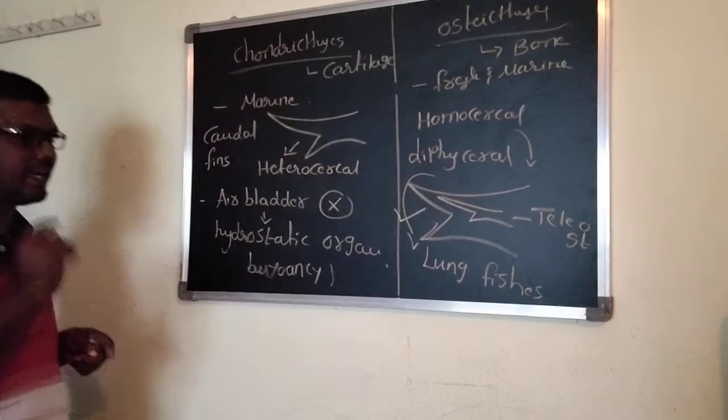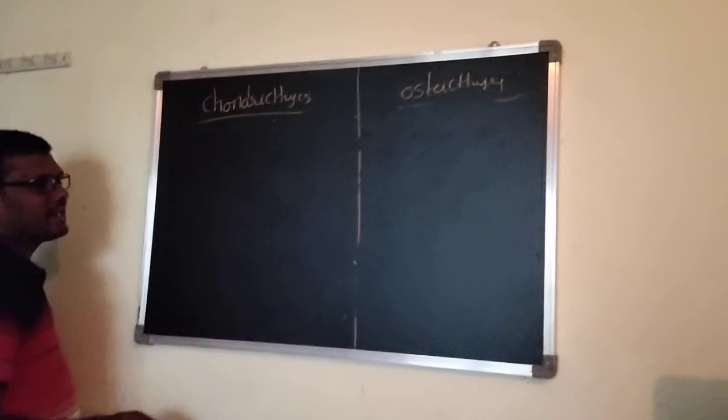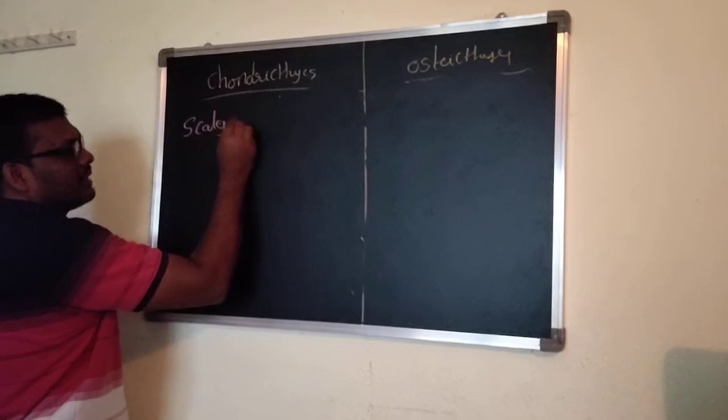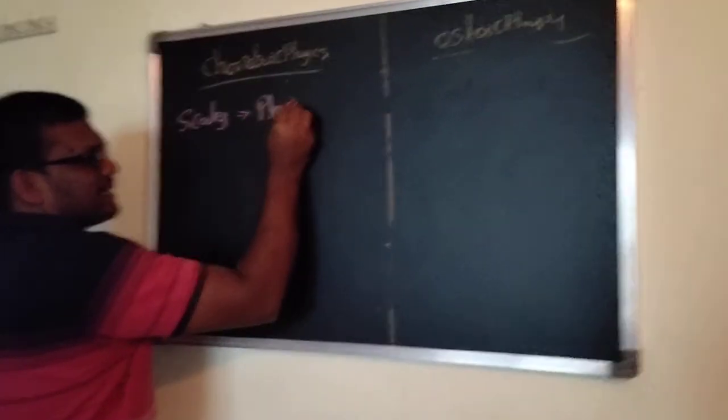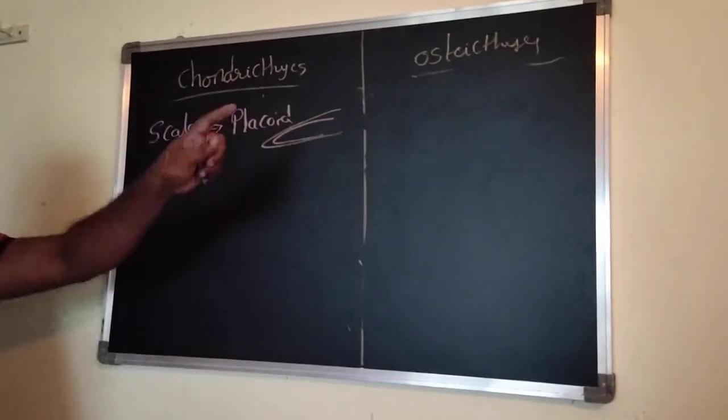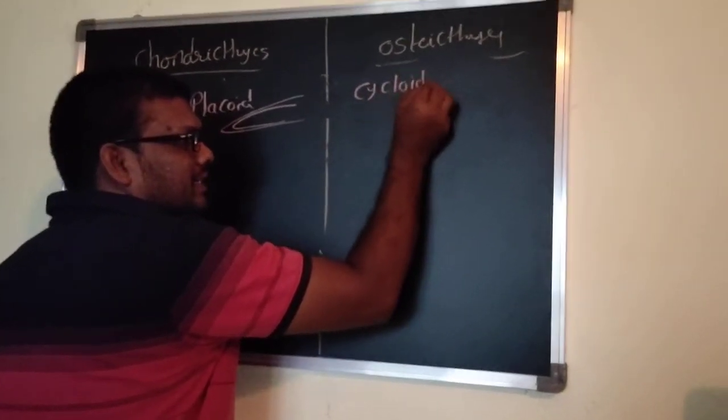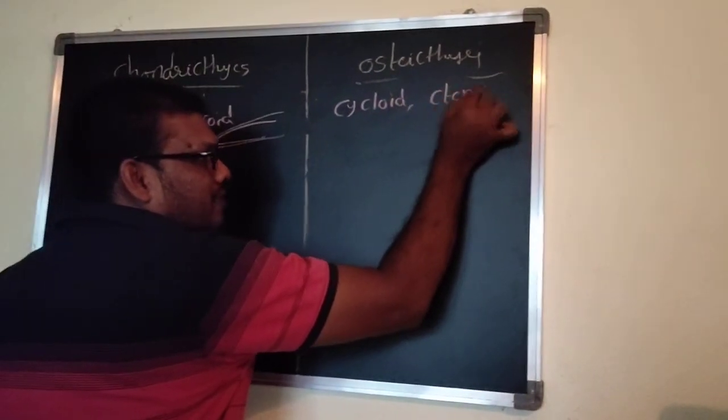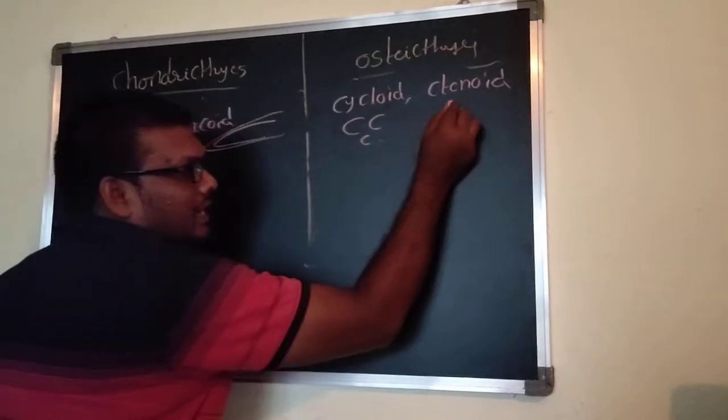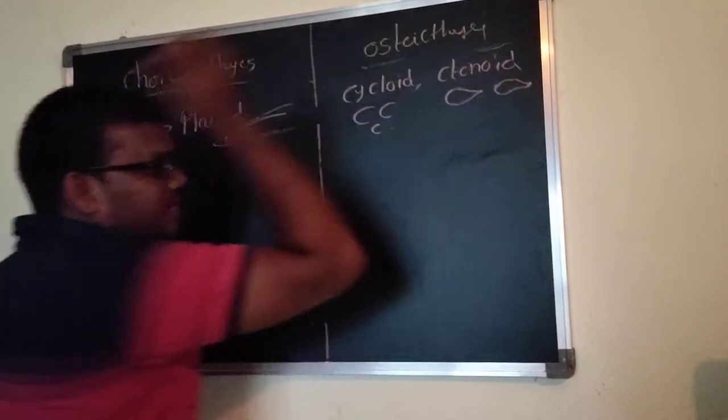If you observe Chondrichthyes type organisms, the scales are placoid scales. And if you observe Osteichthyes, the type of scales are cycloid scales and ctenoid type of scales. These types of scales are present.